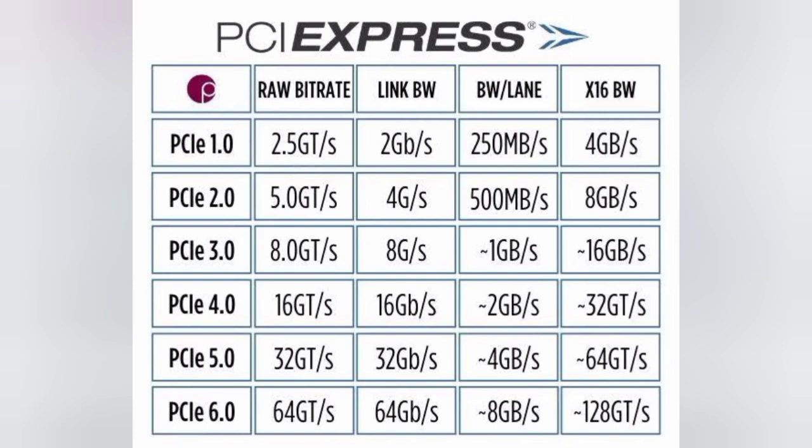12th gen Intel Core CPUs provide up to 16 CPU PCIe 5.0 lanes and up to 4 CPU PCIe 4.0 lanes, while 11th gen Intel Core CPUs — like the unlocked Intel Core i9-11900K — provide up to 20 CPU PCIe 4.0 lanes.